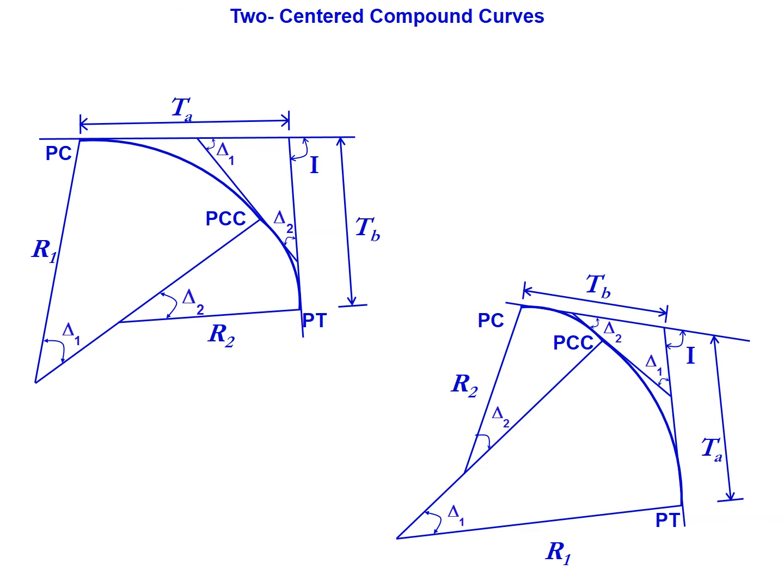It's important to remember the nomenclature: the subscript 1 is always used to represent the larger radius curve, and subscript 2 is the smaller radius curve of the two. Those remain in place regardless of which situation you have, so it's important to know whether you need to solve for T sub A (if the larger curve is first) or T sub B (if the larger radius curve is second).